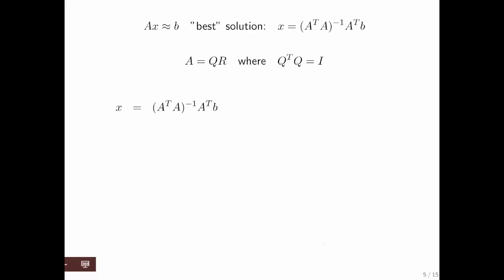X then is equal to this formula, which is really the pseudo-inverse of A times the vector b. If we now plug in QR everywhere where we have an A, we get this formula.